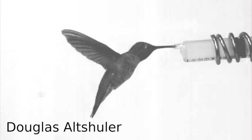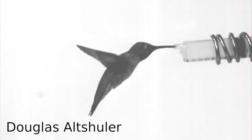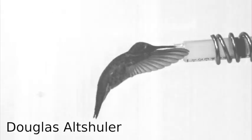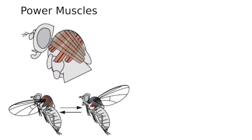In birds, bats, as well as many other flying insects, the muscles that do the work of powering the wing are also responsible for steering. In flies, however, these two jobs are delegated to two different groups.